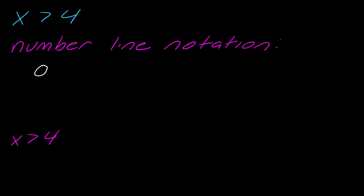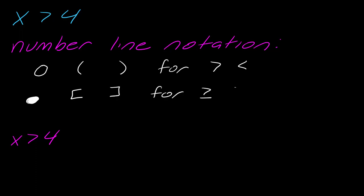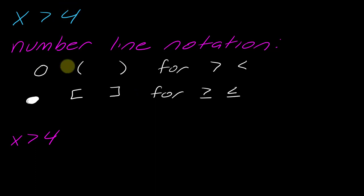So first of all, we have either the open circle or the round brackets. This is for either greater than or less than signs, versus a closed dot or a square bracket, which is for greater than or equal to or less than or equal to. Different books use different things, so it doesn't matter which one you'd like to use. I'm partial to using the brackets, but these literally mean the same thing — it's just notation.